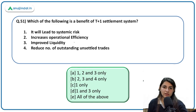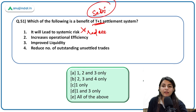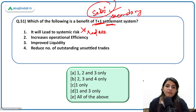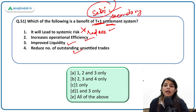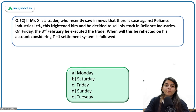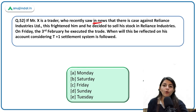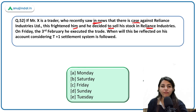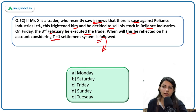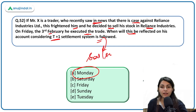Benefits of the T+1 settlement system brought out by SEBI: it will lead to systemic risk — incorrect; it will actually reduce systemic risk. It will increase operational efficiency — correct. It will improve liquidity — correct. It will reduce the number of outstanding unsettled trades — correct. Example: if Mr. X sells his Reliance Industries stock on Friday 3rd February under T+1 settlement, when will it reflect in his account? The answer is Monday, because Saturday and Sunday are holidays, so T+1 means the next trading day, which is Monday.